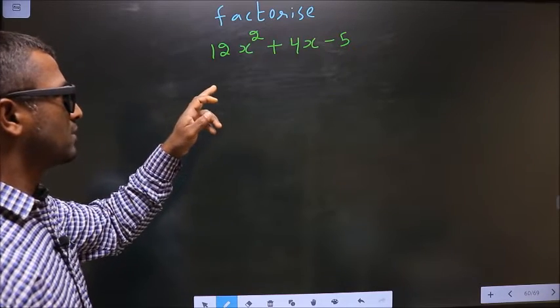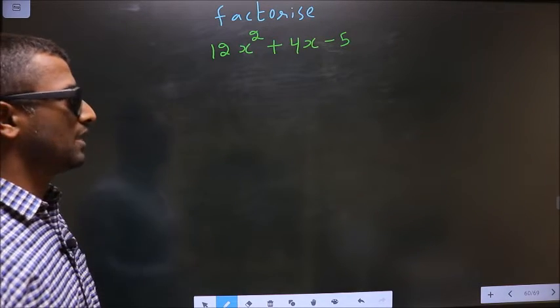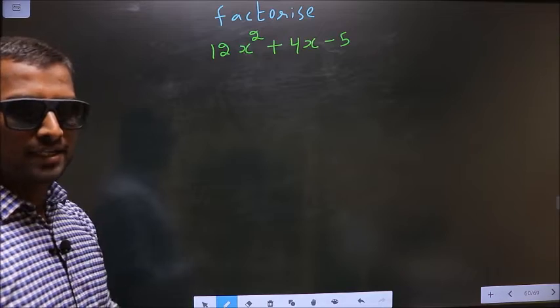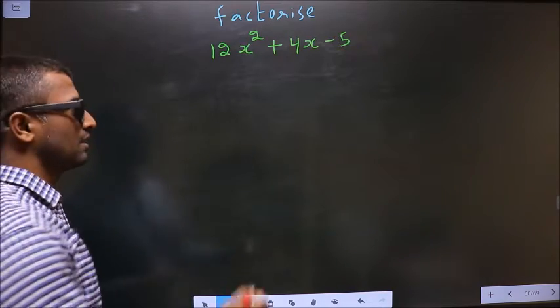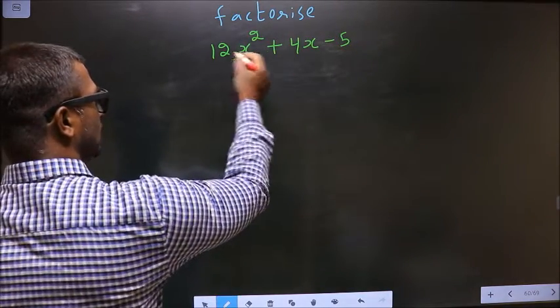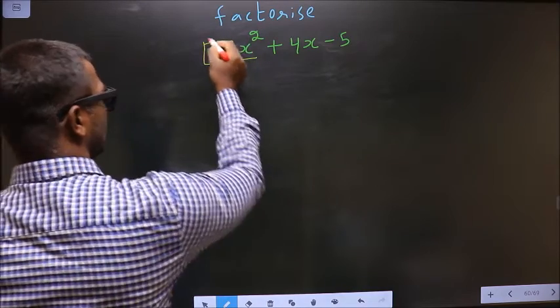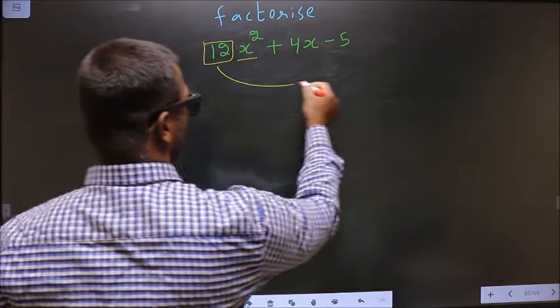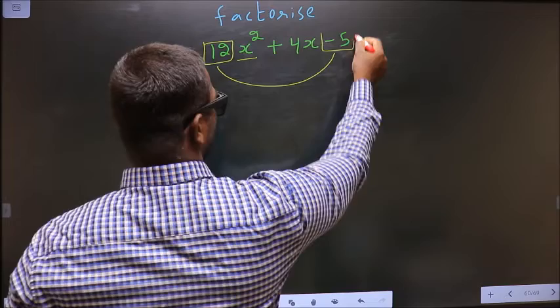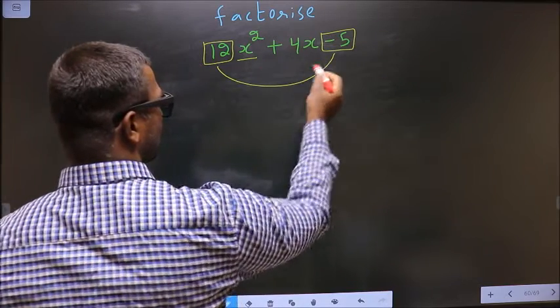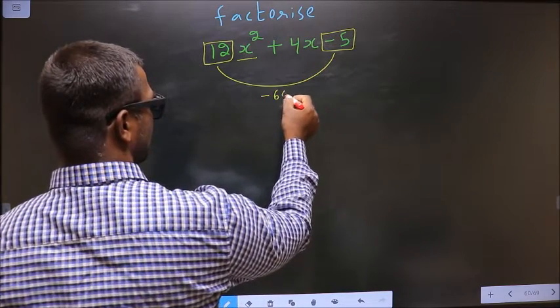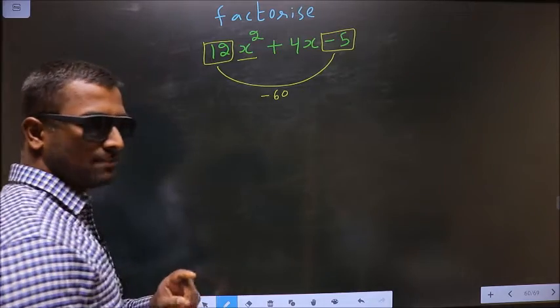Factorize 12x² + 4x - 5. To factorize, step 1: the coefficient of x square, that is 12 here, should be multiplied to the constant, that is -5. So 12 into -5 is -60. This is your step 1.